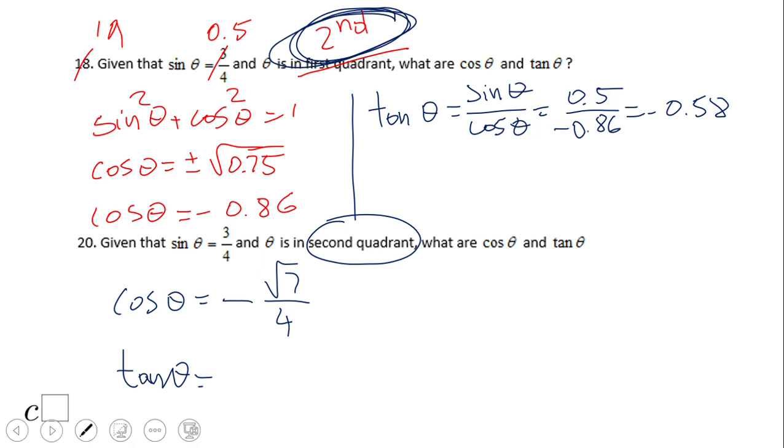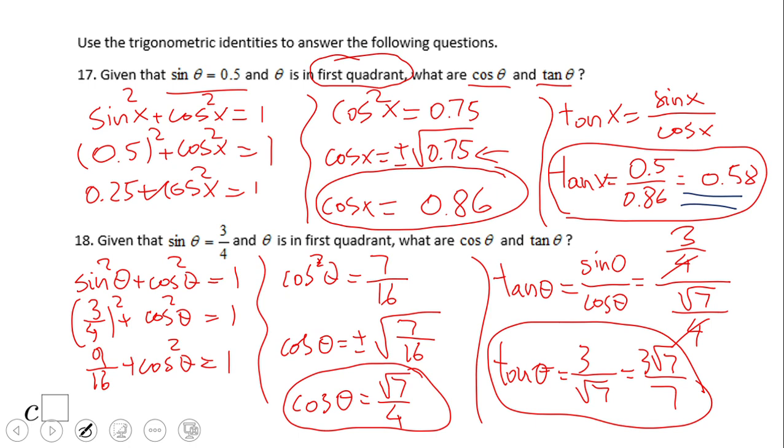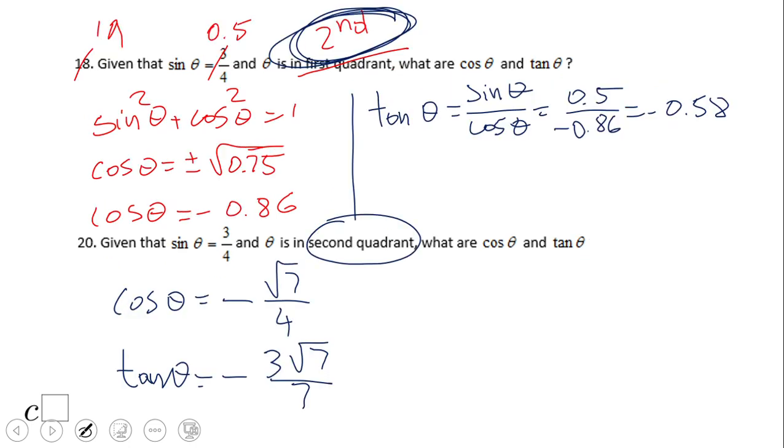Negative 3 square root of 7 over 7. So, very important to read the problem and see what quadrant you are in. Based on that quadrant, you're going to decide the signs of sine and cosine. If you enjoyed this video clip, don't forget to click the like button down right. And come back on C-square for more math video clips.